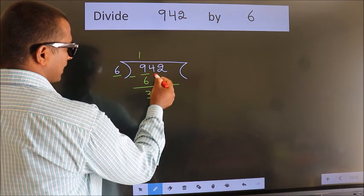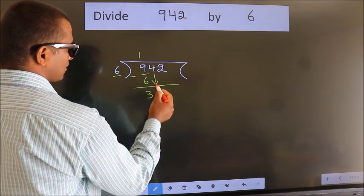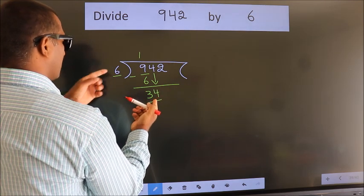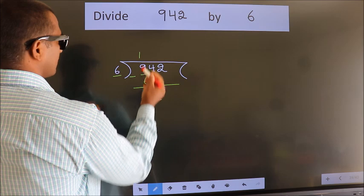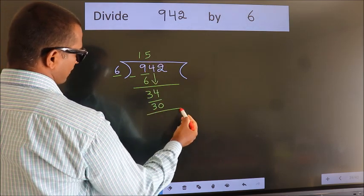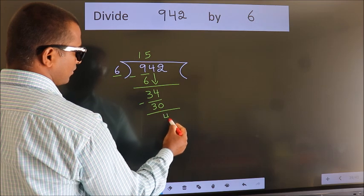After this, bring down the beside number. So 4 down. So 34. A number close to 34 in the 6 table is 6 fives 30. Now we subtract. We get 4.